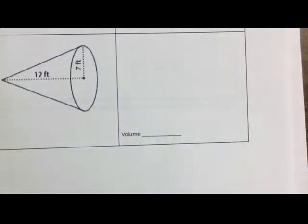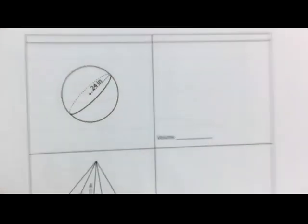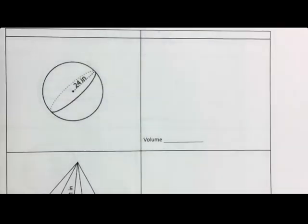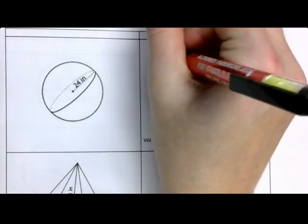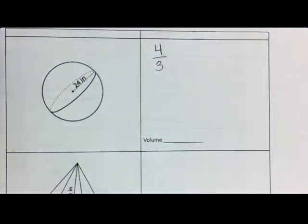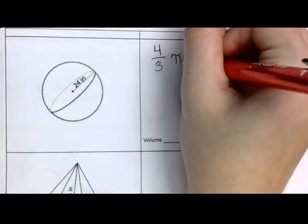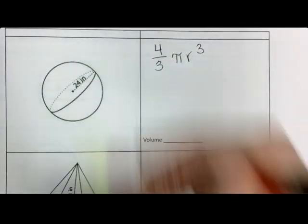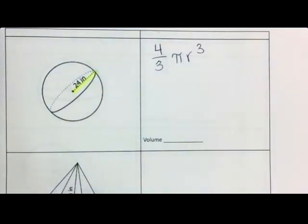For the next one, it is a sphere. We are doing the formula four-thirds pi r cubed. Do they give us the radius or the diameter? This right here is what we're looking at, and in that case, it is the radius.